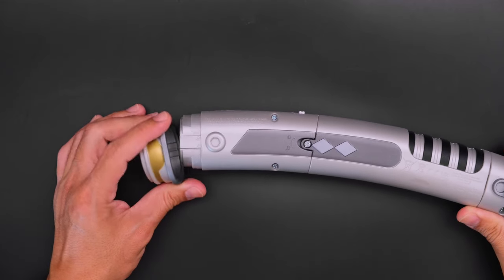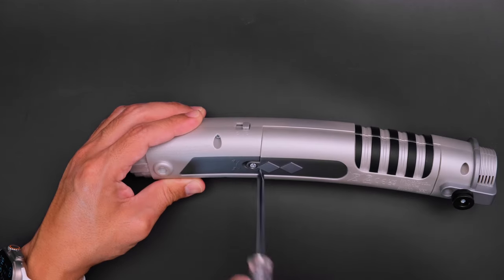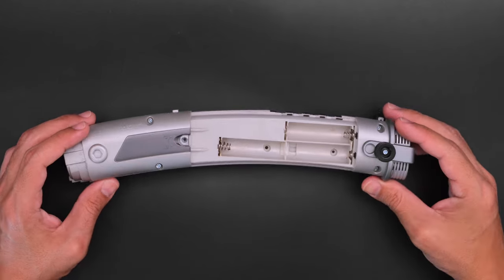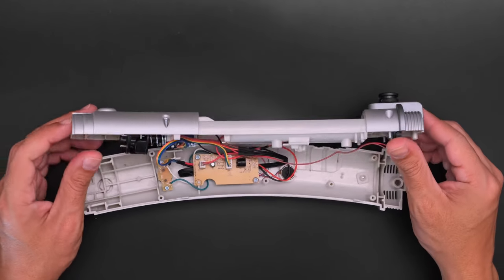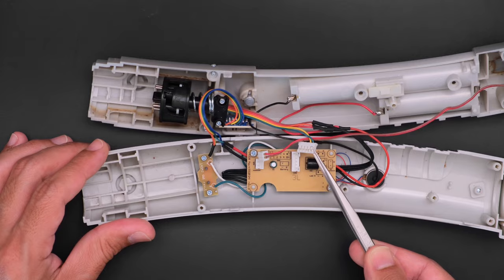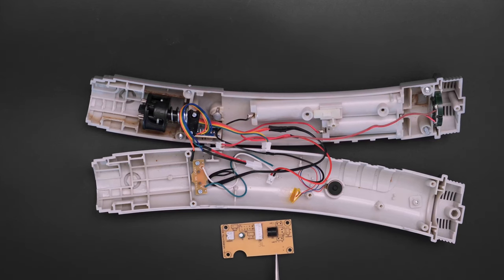Start by removing the pommel, then remove the screw from the battery cover. The two halves are held together with just a few screws so it's easy to take apart. Carefully unplug the connectors from the main board and desolder the wires from the various components.